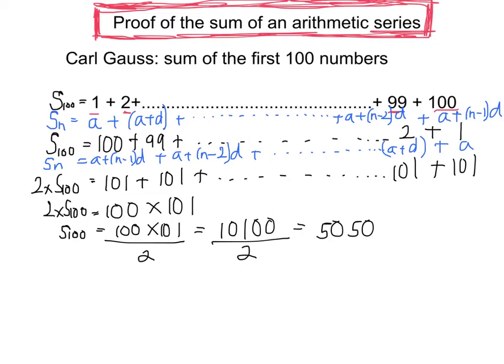Now what do I do? I'm going to say I want two lots of sn. So I'm going to add this term and this term, and I get 2a plus n minus 1d.